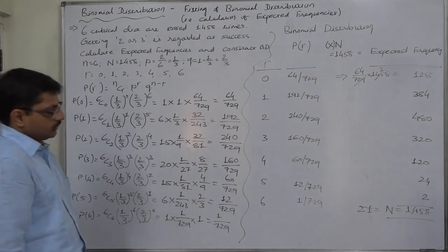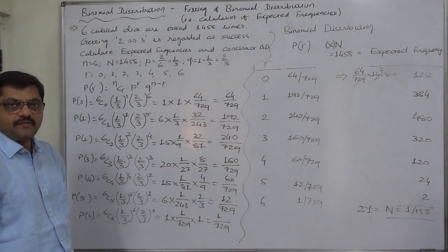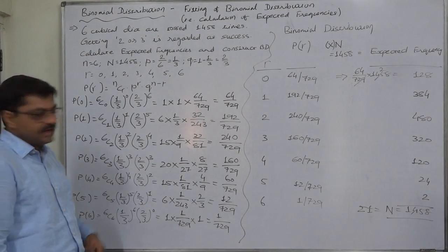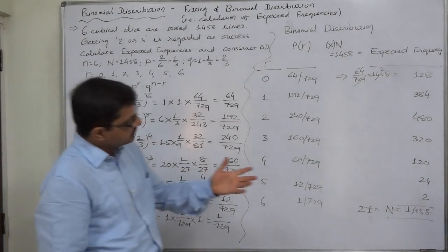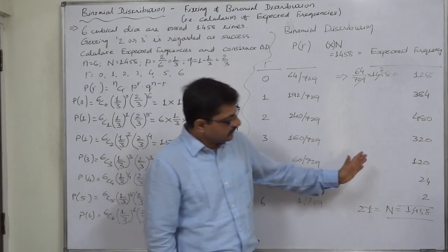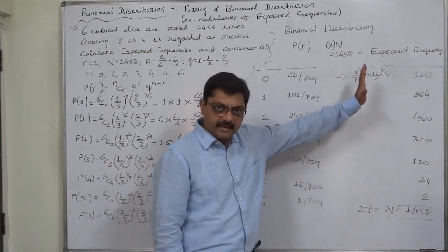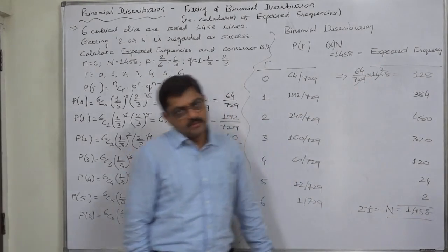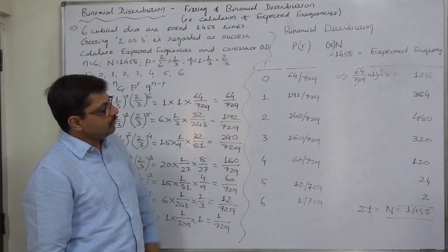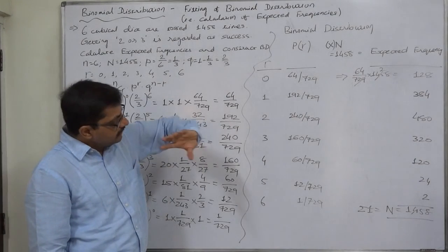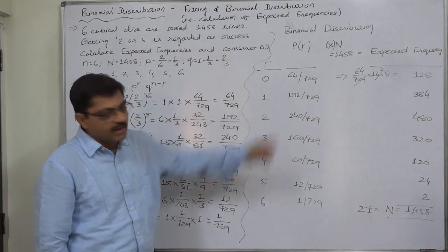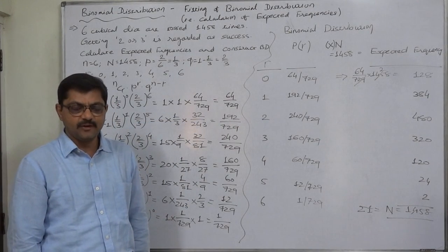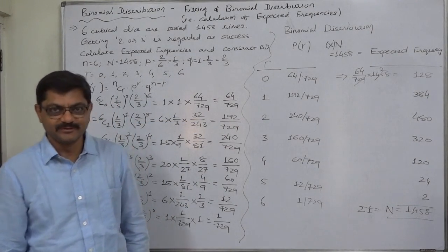This is called fitting of a binomial distribution. In a chi-square test, we can also test whether the data follow a binomial distribution or not by fitting the binomial distribution. That's it for now, thank you.